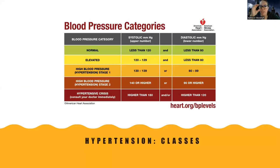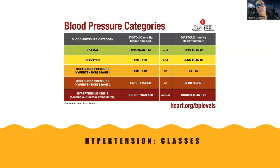Normal blood pressure used to be 120 over 80, but now they want it less than 120 and less than 80 — more like the 110s over 70s. It's always good to know your patient's normal when caring for someone with hypertension. Everyone's going to be a little bit different, and some people we maintain at a slightly higher level. Always talk to the doctor about target blood pressure for each patient.